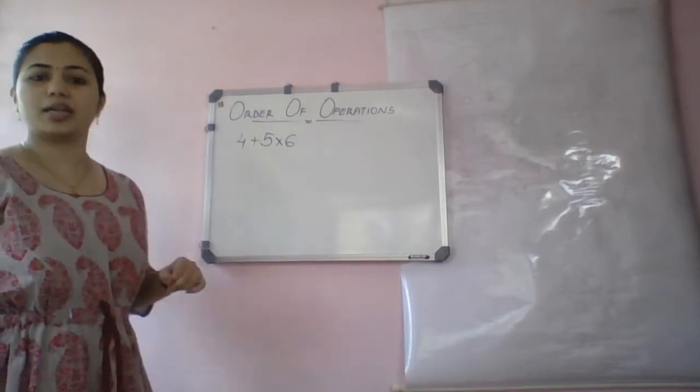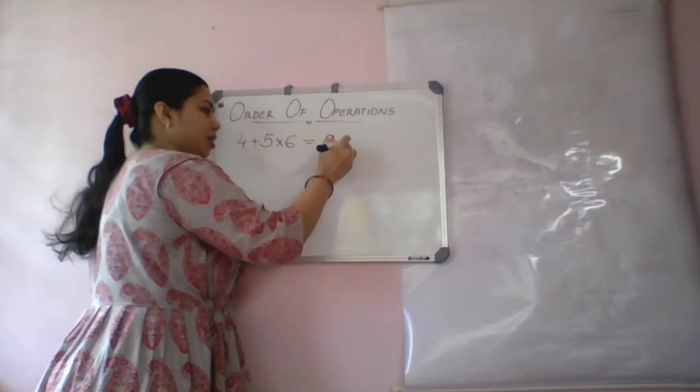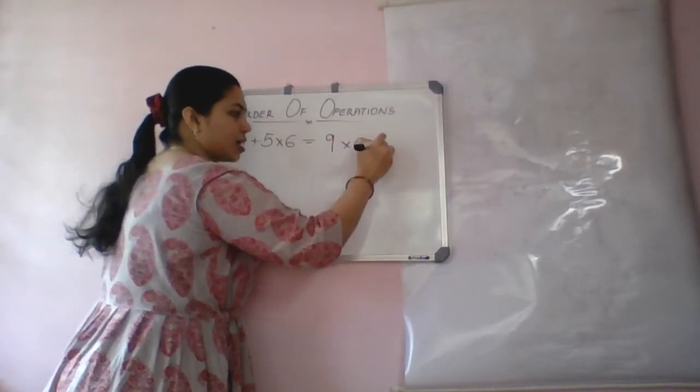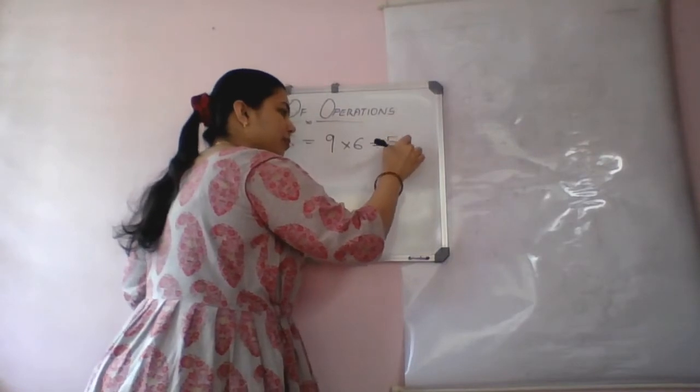say 4 plus 5 into 6. How do I do? Add and add and add. So, 4 plus 5 is 9 into 6. And 9 into 6 is 54. Right?